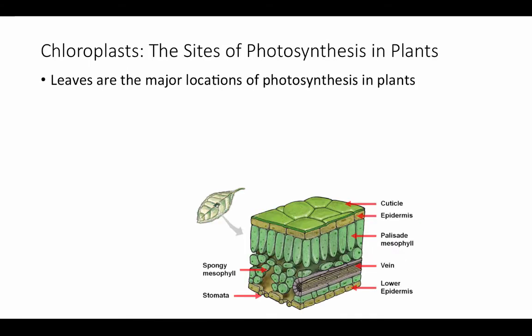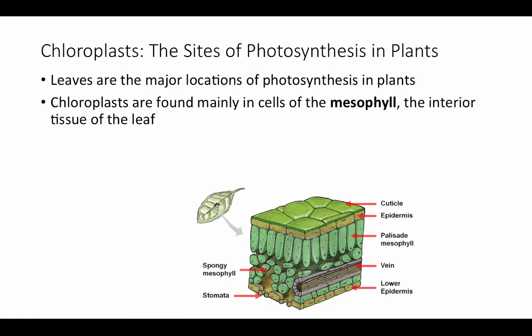Leaves are the major location of photosynthesis in plants, although any green part of a plant — including green fruits and stems — can undergo photosynthesis. Leaves are specialized with a large surface area to gather the maximum amount of light, making them the major photosynthetic organs. Chloroplasts are found in cells within the leaves called mesophyll — the tissue in the middle of the leaf — including spongy mesophyll and palisade mesophyll, protected by a cuticle and epidermal cells.